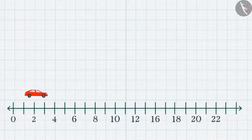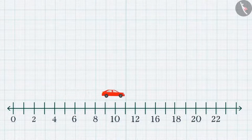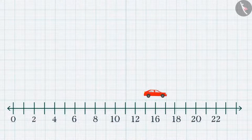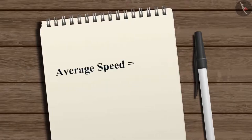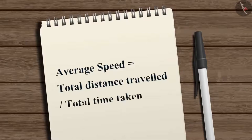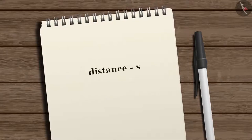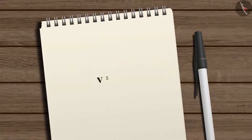In the case of non-uniform motion, since speed varies over the given time interval, we describe the rate of motion in terms of average speed. Average speed is defined as the total distance traveled divided by the total time taken. If an object travels a distance s in time t, then its speed v is equal to s divided by t.